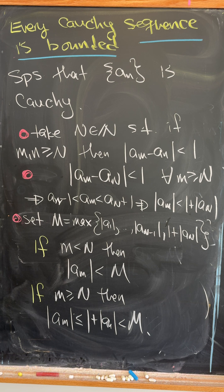And now we can build our bound. We'll set M equal to the maximum of the absolute value of all of the terms up to a_{n-1}, and then we'll have one plus a_n in absolute values.